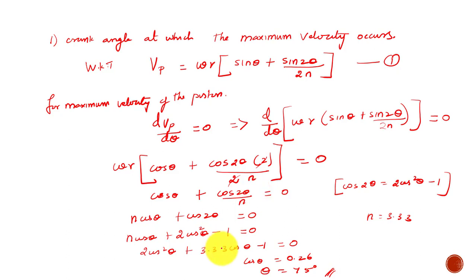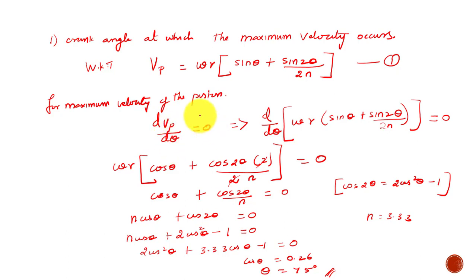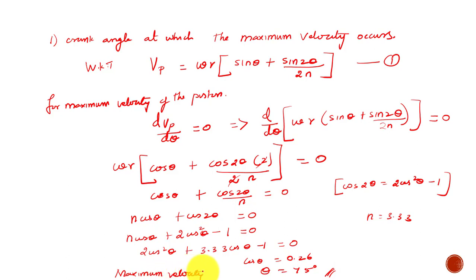So the first part is complete. The crank angle at which the maximum velocity occurs is 75 degrees. We applied the condition that the derivative of velocity of the piston with respect to θ is equal to 0, because at maximum velocity the function is constant. By differentiating the velocity equation and substituting known values, we obtained θ = 75 degrees, at which the maximum velocity occurs.